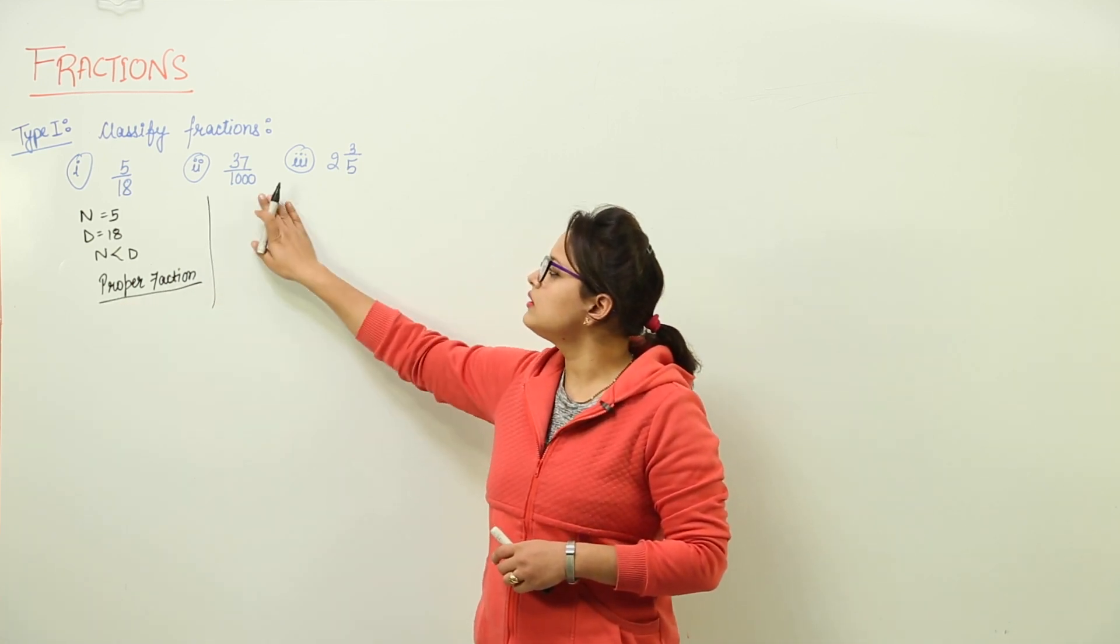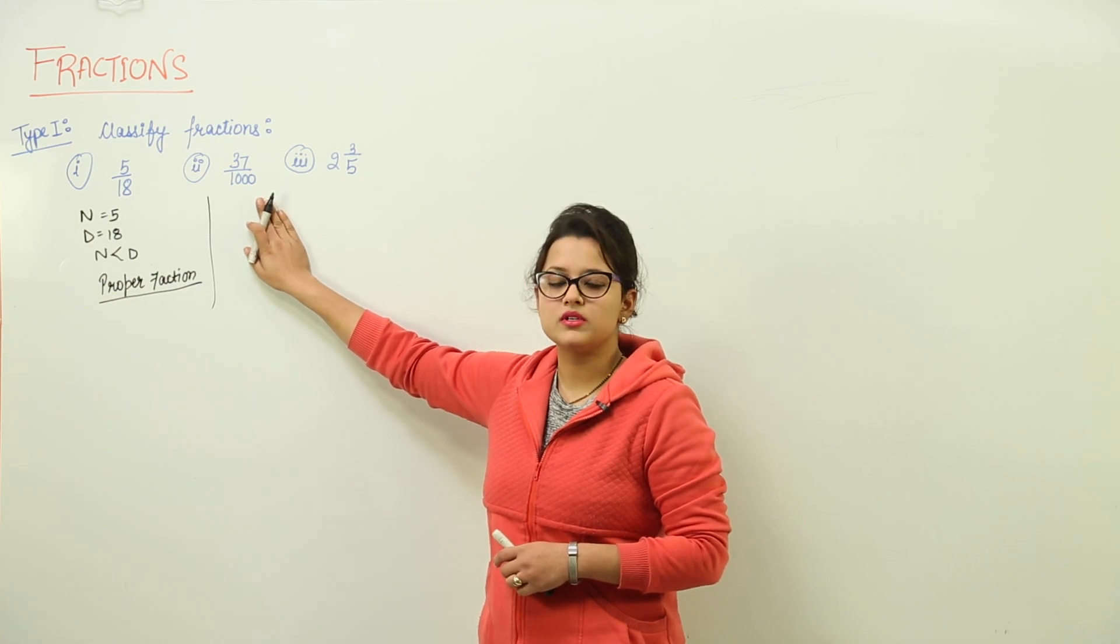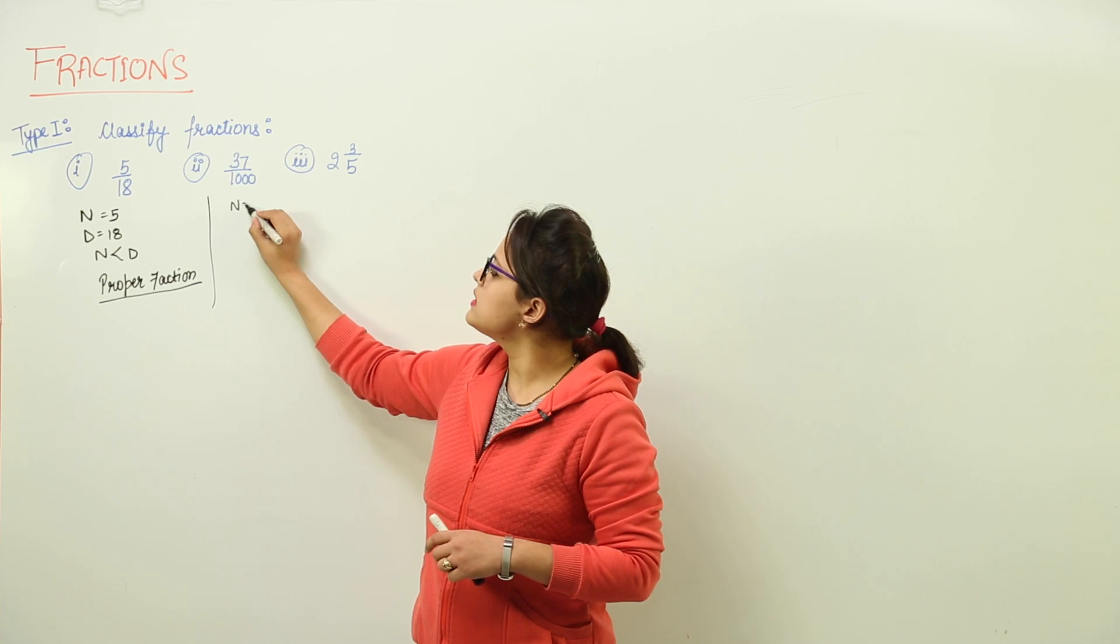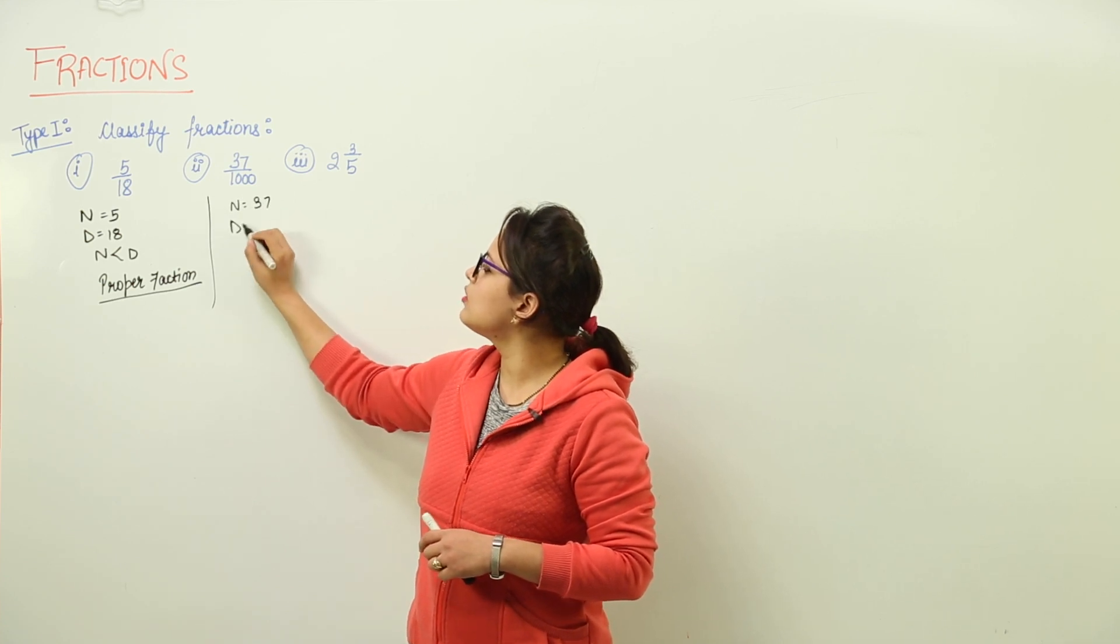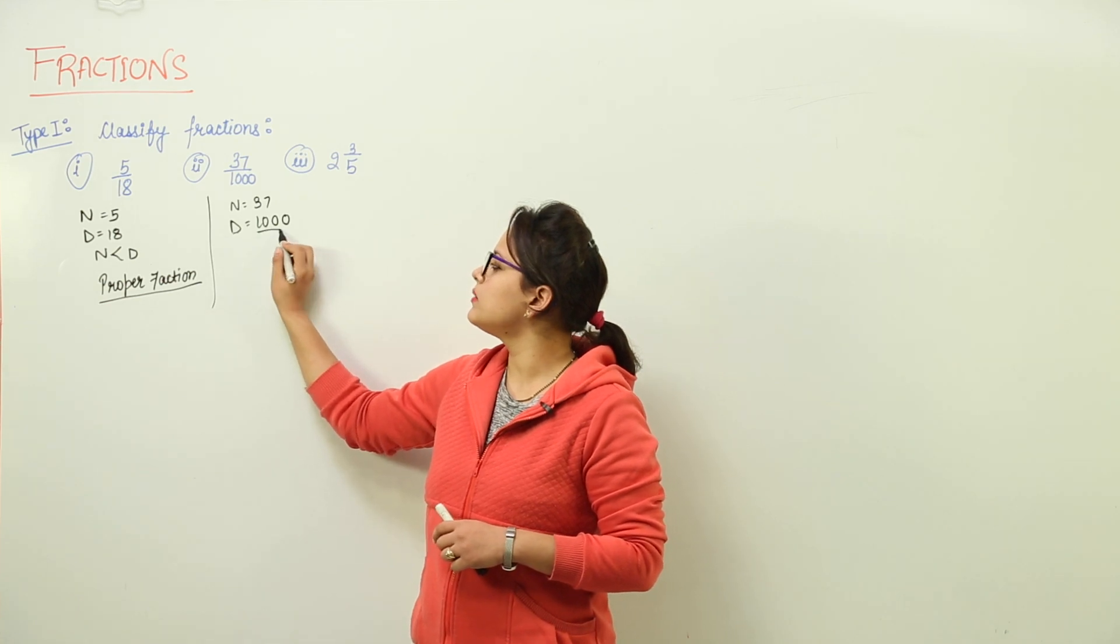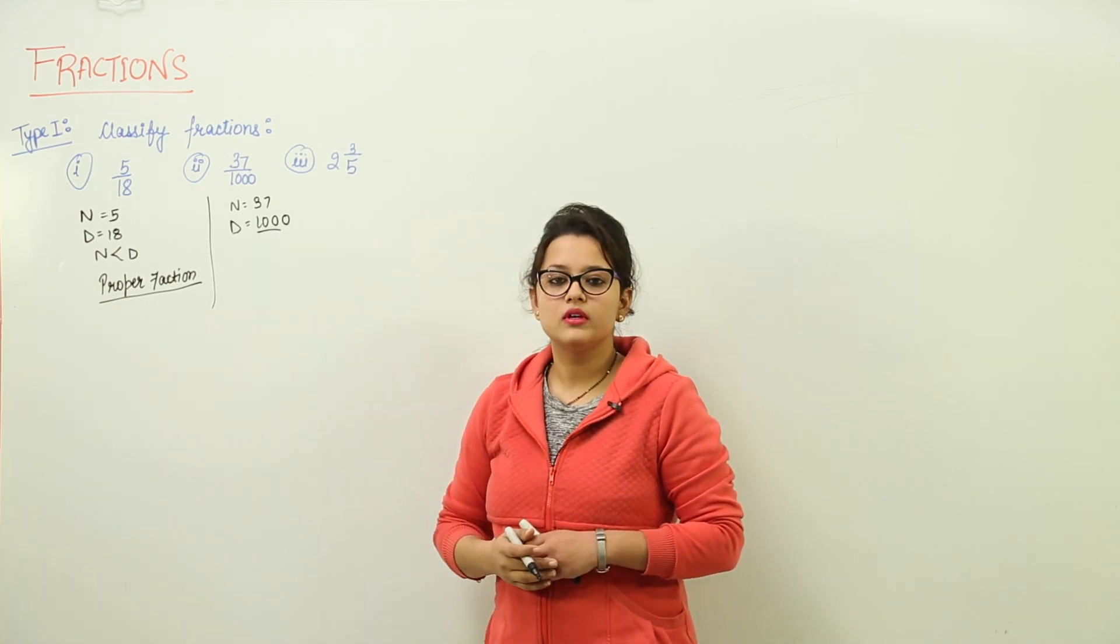The next one is 37 upon 1000. Here we can clearly see the numerator is 37 whereas the denominator is 1000. If you check here, the denominator is in the powers of 10.